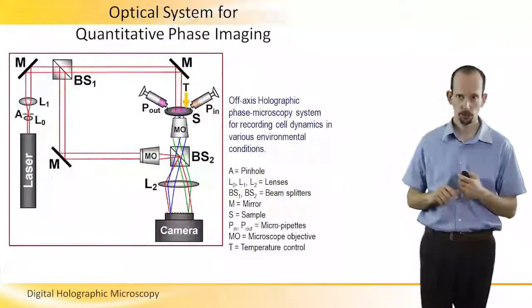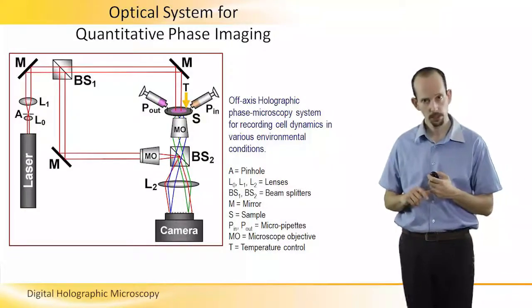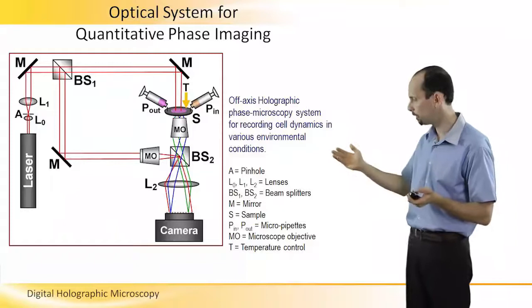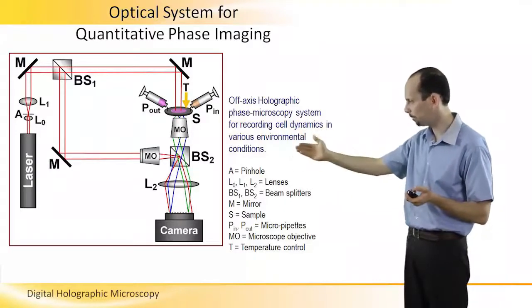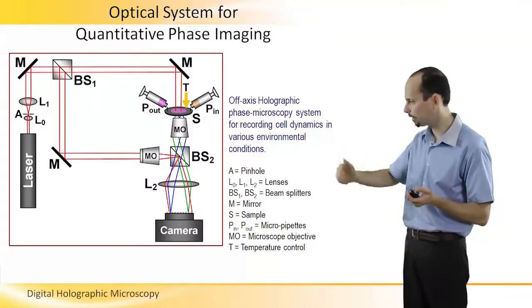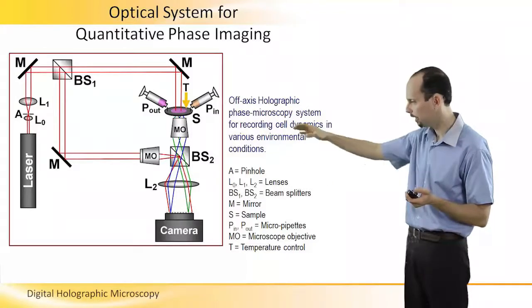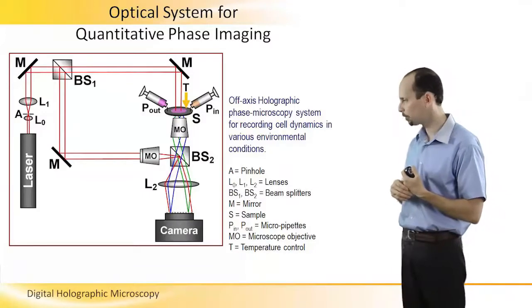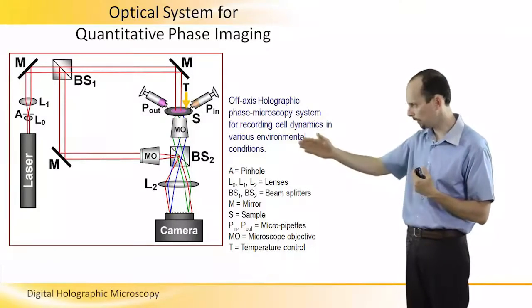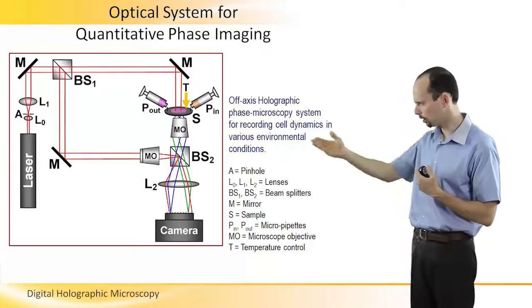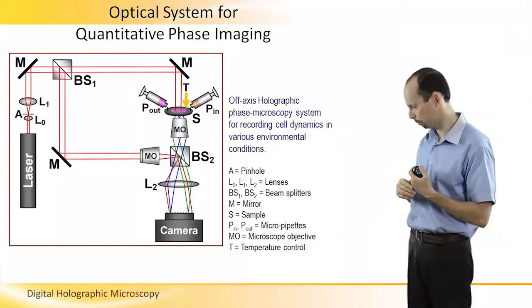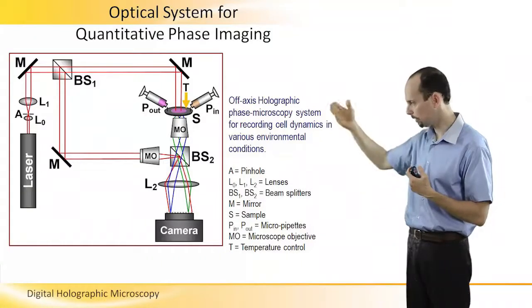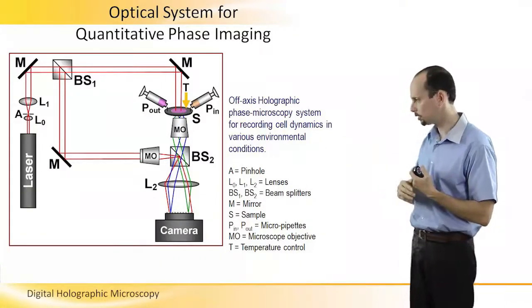To record cells using this method, we can use, for example, the Mach-Zehnder setup. We have two beam splitters. One beam passes through the sample, magnified by this microscope objective, and projected onto the camera using a 4F system using lens L2. Another beam comes directly from the source and goes through another microscope objective, compensating objective, and interferes with the first beam on the digital camera plane.